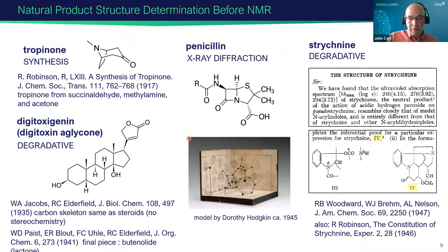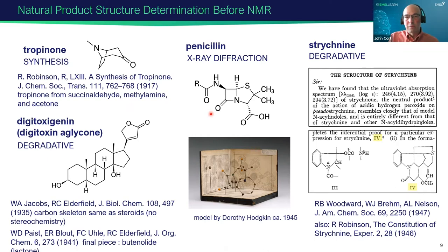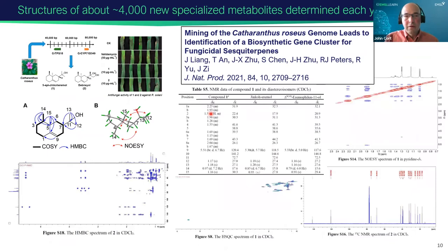It's really important to understand the structures of molecules. In chemistry, structure determines function and reactivity. Before NMR was invented, there were several different ways of determining structure. Nowadays, most new molecules have their structures determined with NMR spectroscopy. In the world of specialized metabolites or natural products, about 4,000 are identified each year, and the vast majority are identified with NMR spectroscopy.